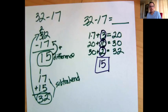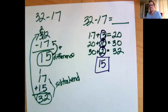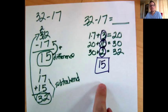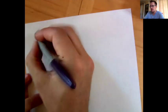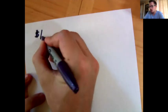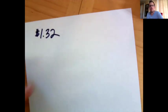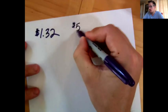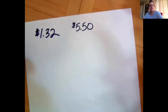I know some of you still prefer the old method, so let me give you an example where the new method is clearly superior. Imagine you own a business, and a customer buys an item that costs one dollar and 32 cents. They pay with a five dollar bill and two quarters — five dollars and 50 cents. How much change should you give back?